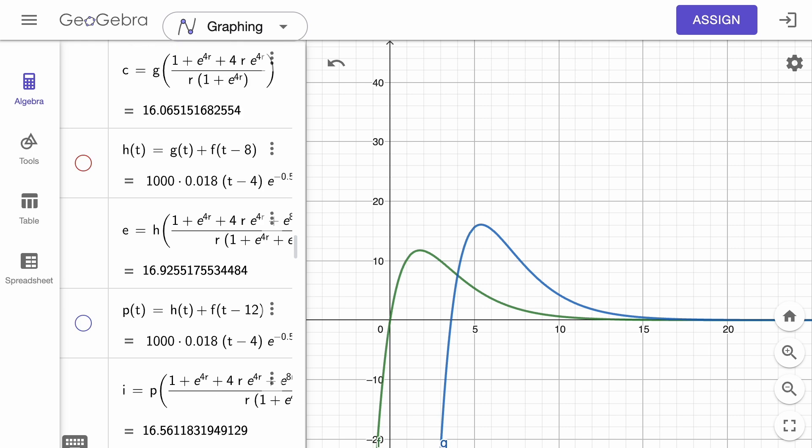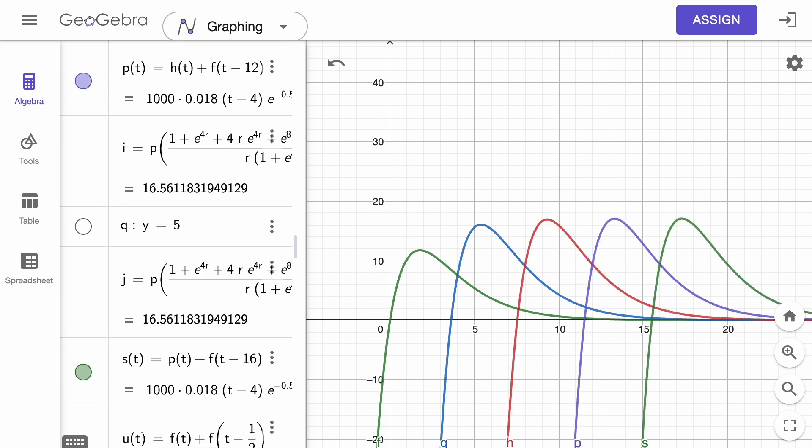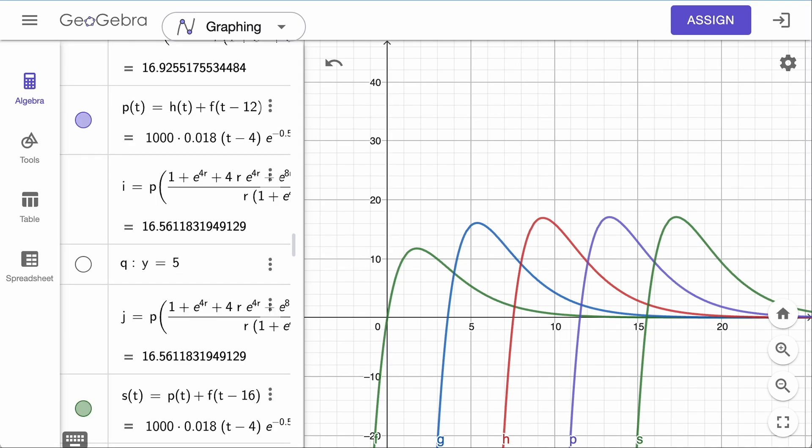Then the next dose we can create by graphing F of T minus 8 plus F of T minus 4 plus F of T, and keep on going. Notice the peaks seem to get higher and higher, but seem to be leveling out.